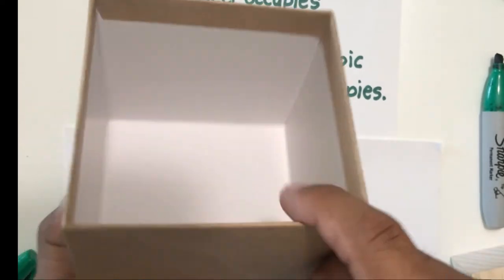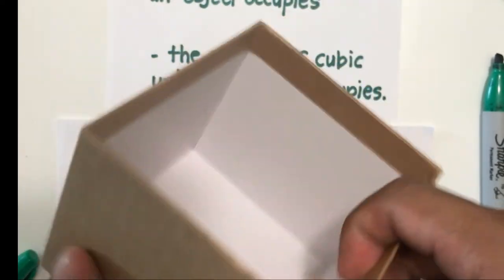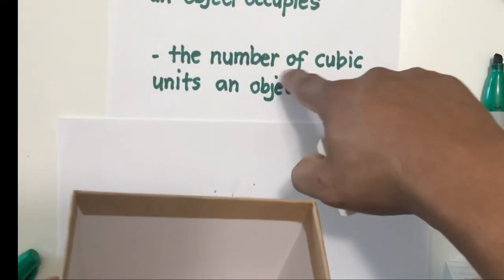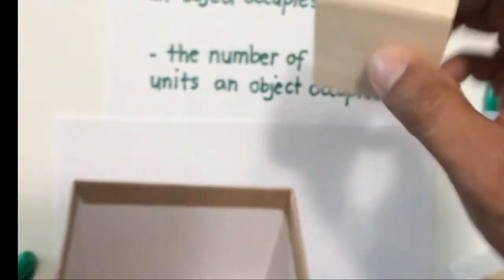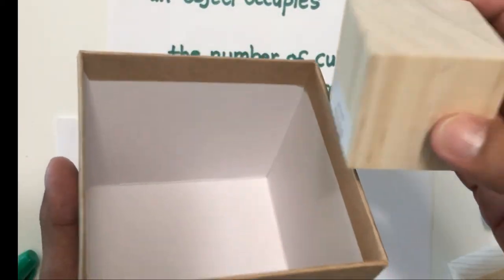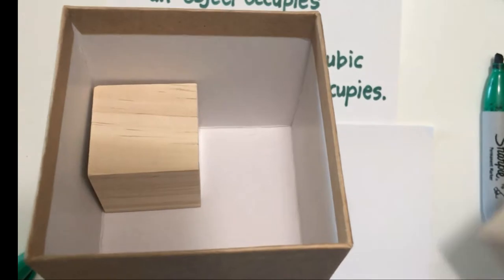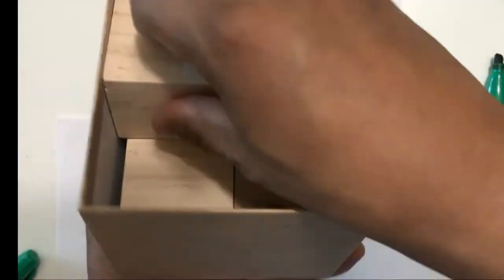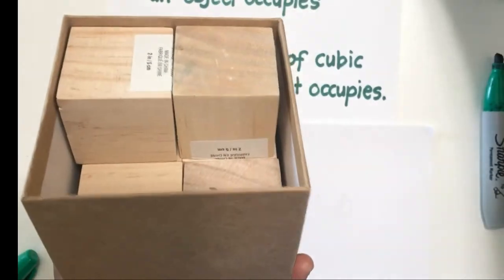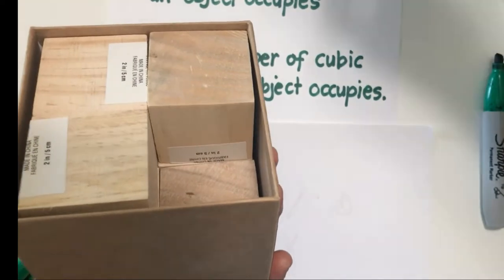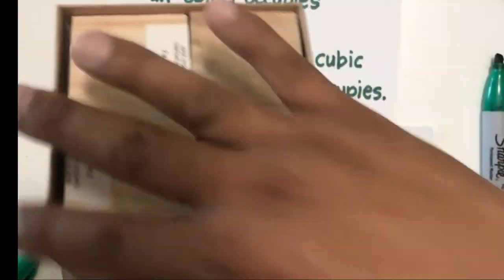So let's find now what is the volume of this box based on the definition given. It's the number of cubic units an object occupies. So let's put these cubic units inside. You have 1, 2, 3, 4 in the first layer, 5, 6, 7, 8 in the second layer.